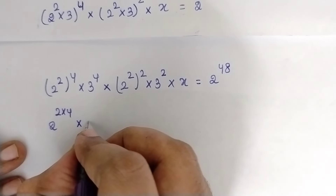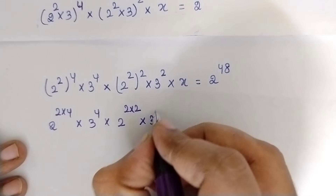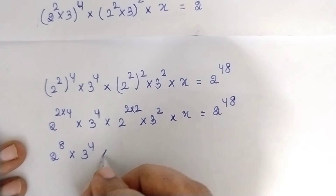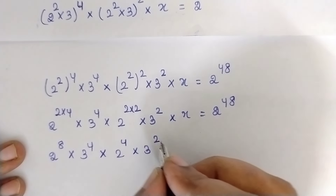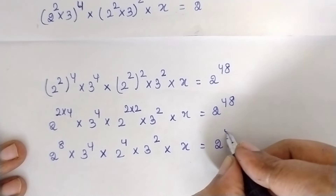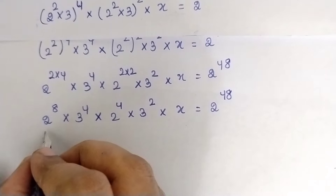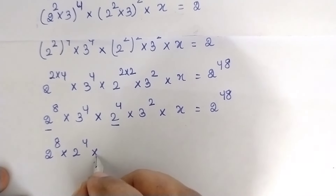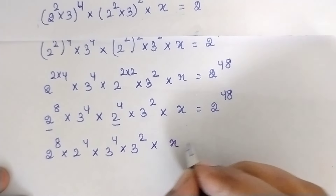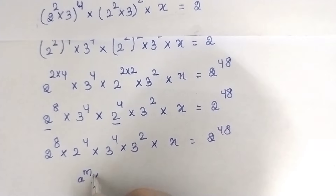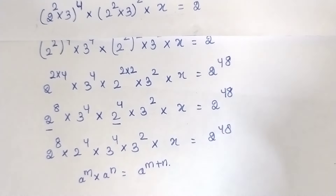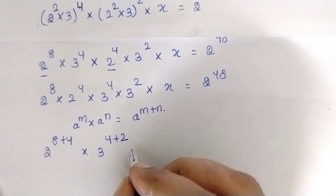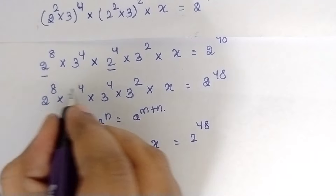This is in the format of a^m · a^n = a^(m+n). So: 2^(2×4) multiplied by 3^4, multiplied by 2^(2×2) multiplied by 3², multiplied by x, equals 2^48. That gives 2^8 multiplied by 3^4, multiplied by 2^4 multiplied by 3², multiplied by x, equals 2^48. Since the base is the same, the powers get added in multiplication.